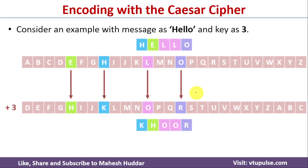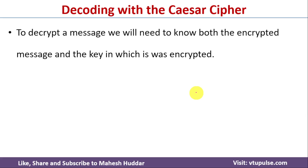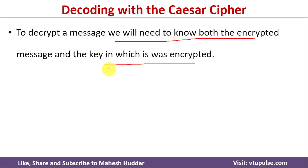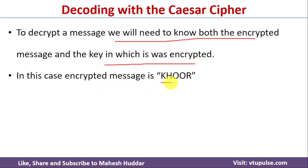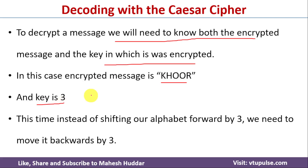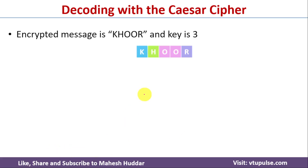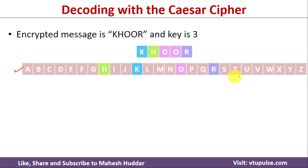Once you encrypt the message, next we need to decode the message. To decrypt a message, we will need to know both the encrypted message and the key with which it was encrypted. In this case, the encrypted message is K, H, O, O, R and the key is 3. So this time, instead of shifting our alphabets forward by 3, we need to move backward by 3. We will consider the encrypted message K, H, O, O, R against the normal alphabetical order from A to Z.